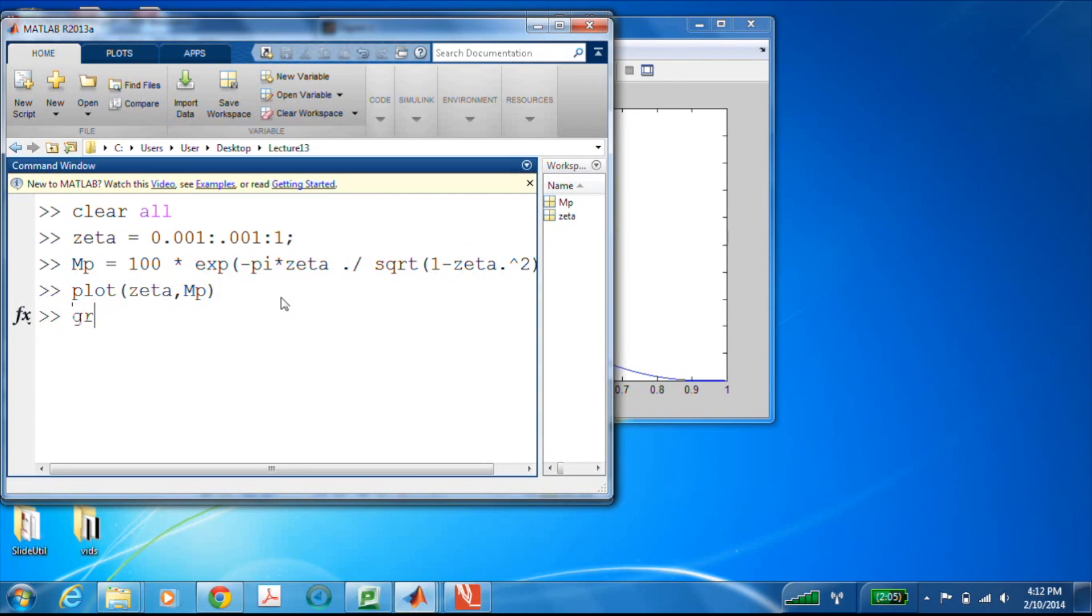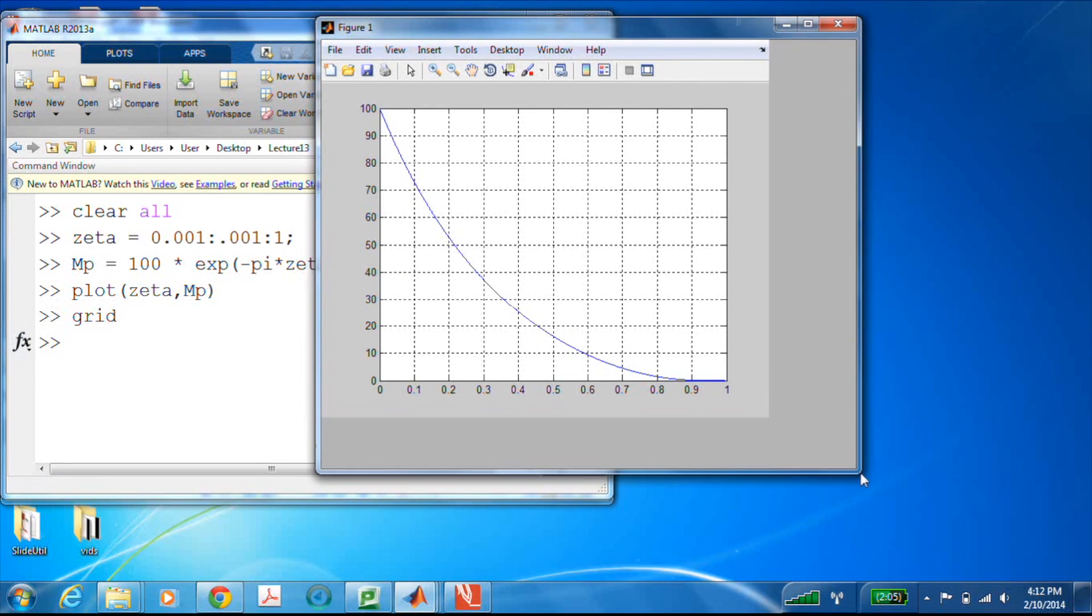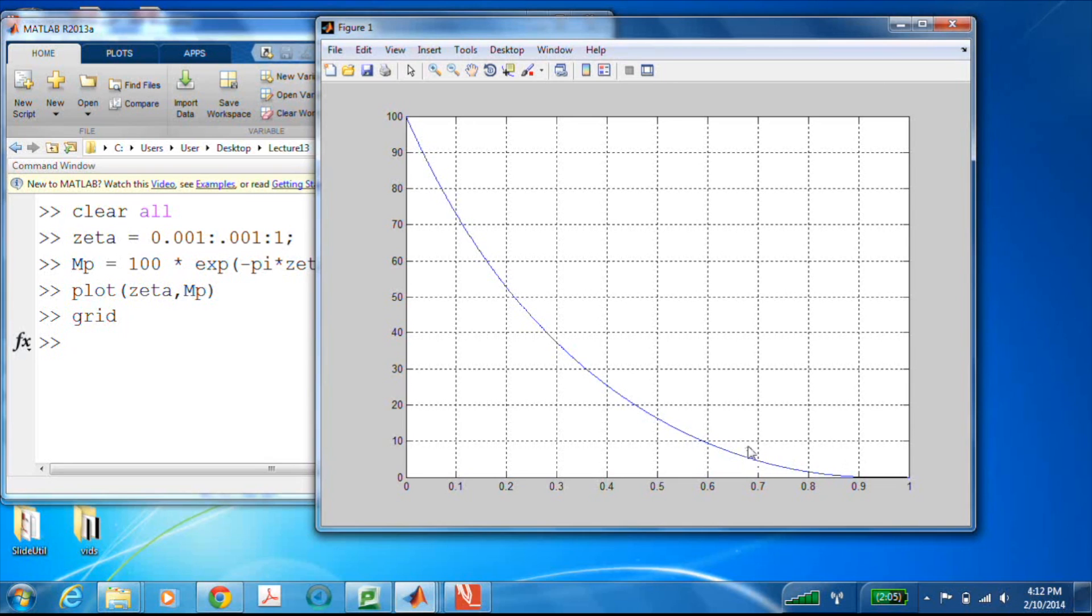And now we'll just go plot zeta mp. There it is. Let's throw a grid on it.